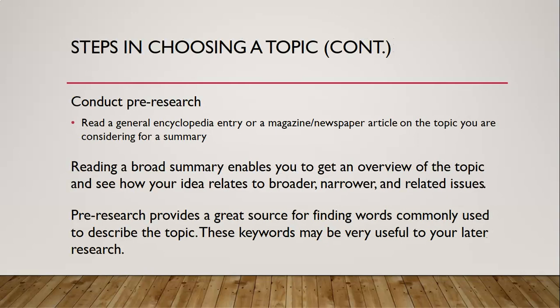One step librarians strongly recommend is to conduct pre-research. Pre-research allows you to determine if there is enough information on your topic to write a properly sourced paper. Begin by reading a general encyclopedia entry or a magazine or newspaper article on the topic you are considering for a summary. Reading a broad summary enables you to get an overview of the topic and see how your idea relates to broader, narrower, and related issues. Pre-research also provides a great source for finding words commonly used to describe the topic — these keywords may be very useful to you later in your research.